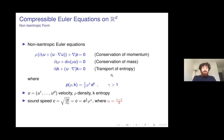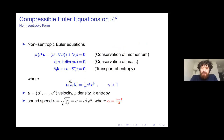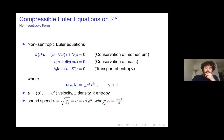Just to introduce the equations we'll be looking at: the general compressible Euler equations. This is the non-isentropic system — we have conservation of momentum, conservation of mass, and transport of entropy. We take the pressure law where gamma is greater than one. Associated with this equation is the sound speed — the speed at which disturbances propagate. It's useful to introduce the exponent alpha, taken to be (gamma minus one) over two.